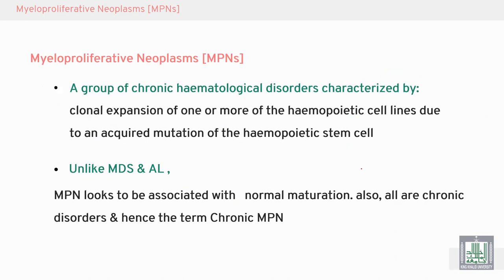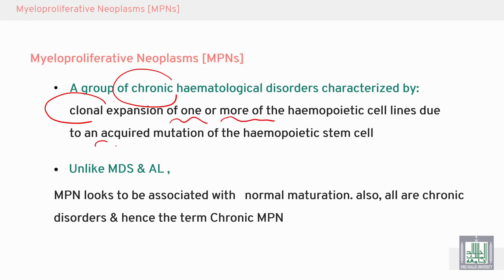MPN is a group of chronic hematological disorders characterized by clonal expansion of one or more hematopoietic cell lines, due to acquired mutations of the hematopoietic stem cell.